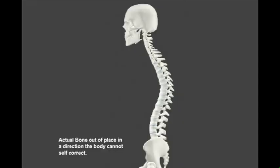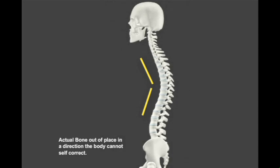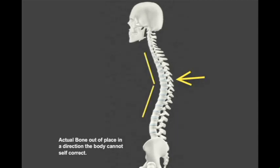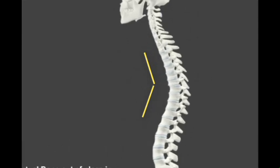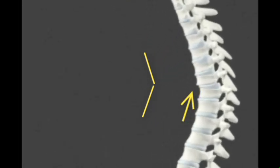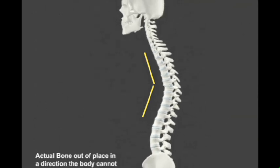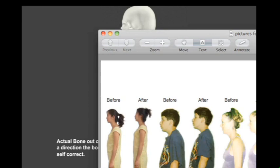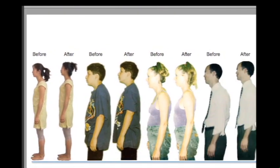What happens when that bone goes out of place is shown here — see how that body is stuck forward? What happens is somehow that bone gets pushed forward and it doesn't just stay like that. It's lost its leverage, it's sticking out, and it's lost its leverage. So what happens is the entire body collapses. And that's why you get collapsed postures like you see here when we show you actual people.